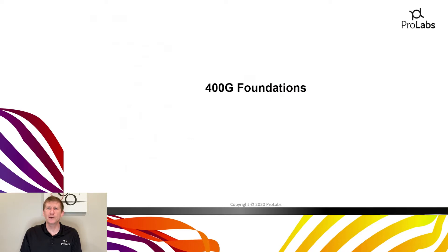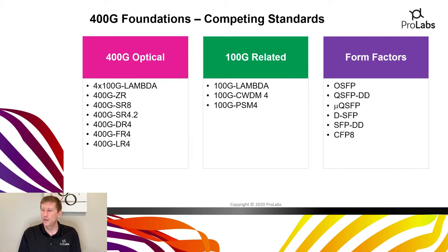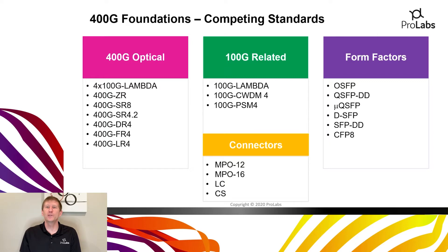Looking at our 400 gig foundations, we want to talk about the hows and whys of why things developed the way they did. As the 400 gig standards were developing, there were quite frankly a lot of competing standards at work — optical standards, how things would roll down to 100 gig, and what form factors would be used. OSFP, QSFP-DD, MU-QSFP, DSFP, SFP-DD, CFP8 were all standards in the queue ready to go for 400 gig.